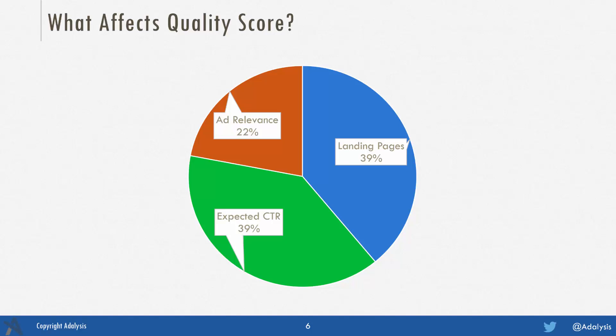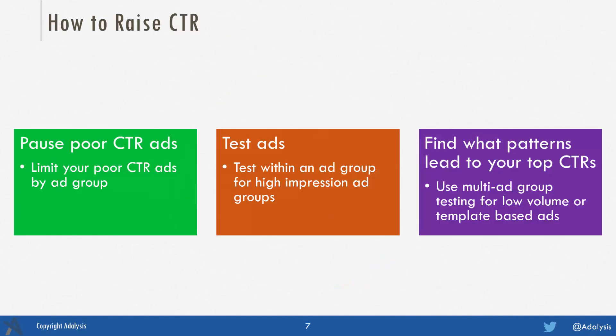Landing pages and expected CTR are each 39% of your visible quality score, and ad relevance is the other 22%. To raise click-through rate, if you have too many ads per ad group, you should pause your worst CTR ads. That'll push up your CTR and increase your expected CTR numbers.